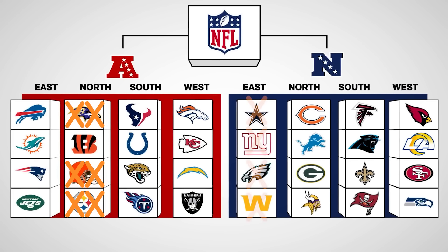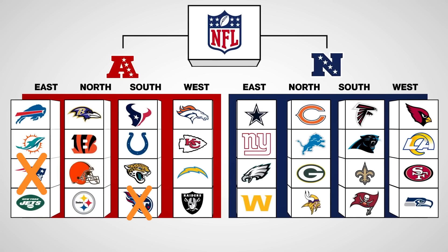The last three games are based on division rankings from the previous year. You already play every team in your division, every team in a specific division from the other conference, and every team in a specific division from your same conference. So now you play one team from each of the remaining two divisions from your conference — one at home, one on the road — and that last game is against an opponent from the opposing conference not already on your schedule.